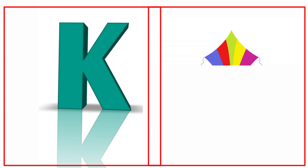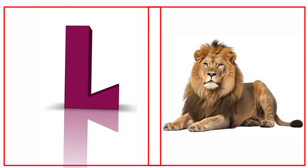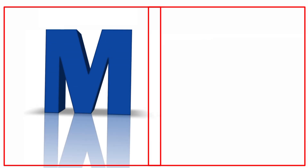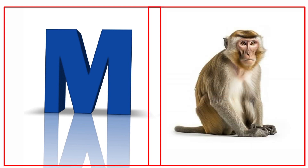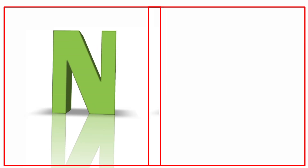K for kite. Kite means patang. L for lion. Lion means sher. M for monkey. Monkey means bandar.